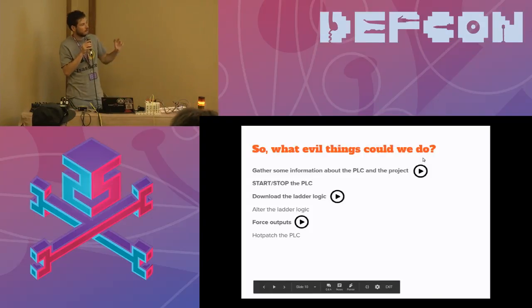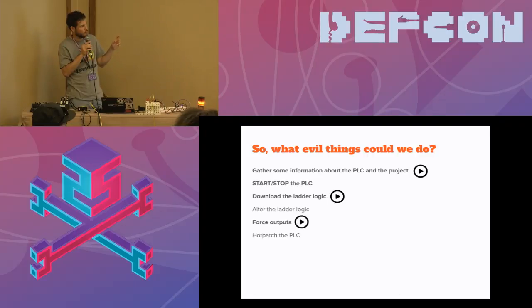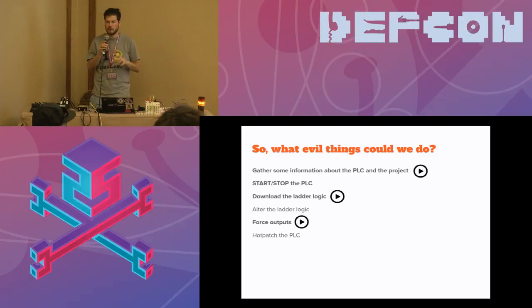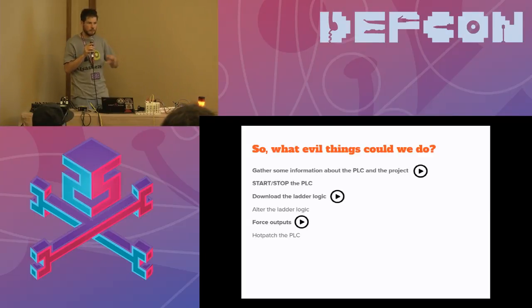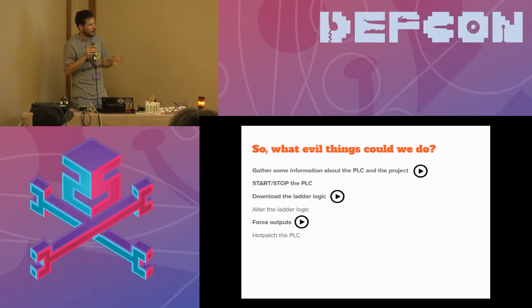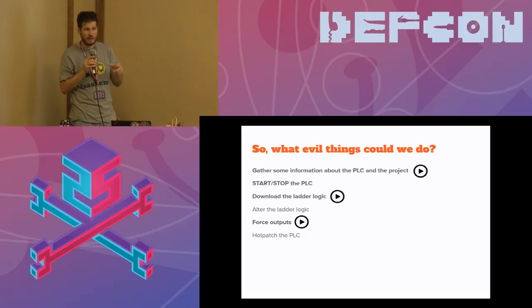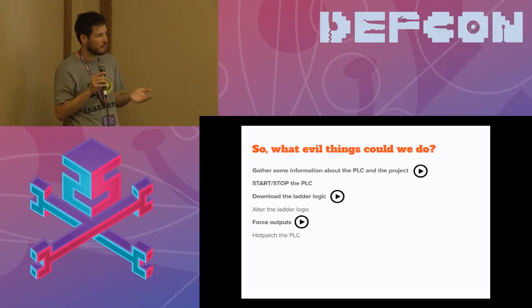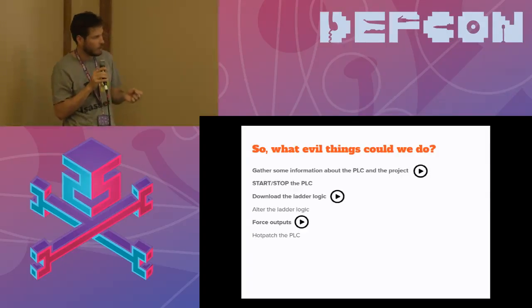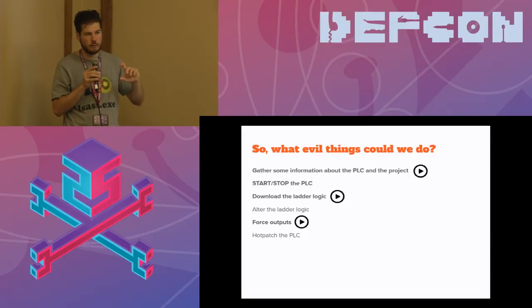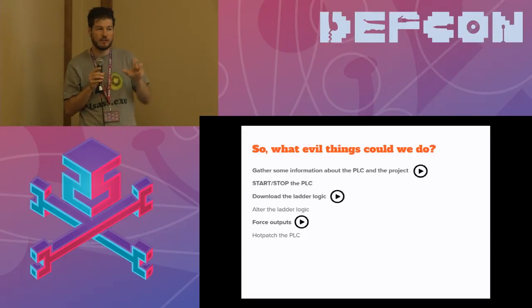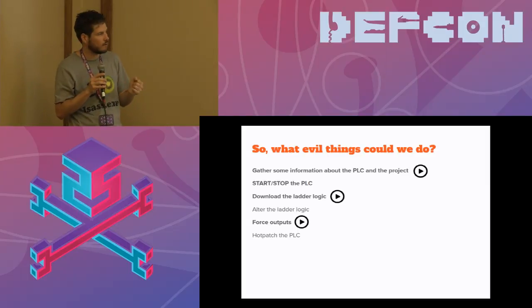Other topics I'd like to work on in the future: the ability to hot-patch the PLC. When you normally program a PLC, you have to stop it, upload the program, and start it again — anyone will notice that in the physical process. However, using Unity Pro you can also hot-patch: make small modifications to the ladder logic without stopping the PLC. I'd like to have a Metasploit module that does the same. I also have another module in the works that doesn't force output values but register values, so you can modify any action inside the ladder logic as you wish.